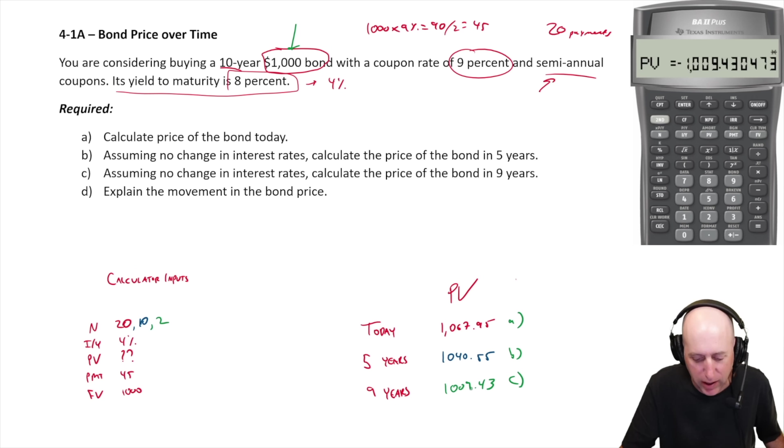The premium was 67 bucks today, 40 bucks five years from now, and nine bucks nine years from now. The premium is going to go down to zero because they're just going to pay me back a thousand dollars without a premium or without a discount. So we expect the movement of any bond to be closer and closer to the maturity value as the maturity date approaches, closer and closer to a thousand dollar face value as the maturity date approaches.